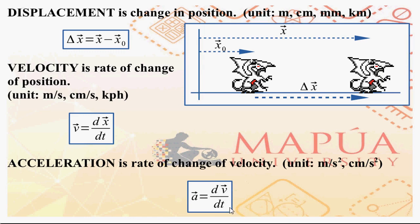So you have displacement, velocity, and acceleration. Displacement has units of length: meters, centimeters, millimeters, kilometers, and so on. Velocity has units of meters per second, centimeters per second, kilometers per hour, and so on. Acceleration has units of meters per second squared, centimeters per second squared, and so on.